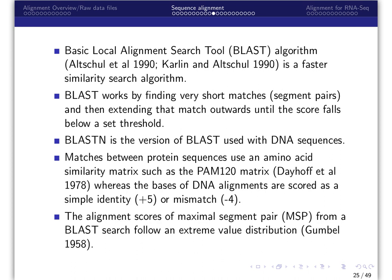More specifically, the BLAST word matching step uses a scoring system that allows for some mismatches as long as the overall alignment score between words is above an empirically determined threshold. Matches between protein sequences use an amino acid similarity matrix such as the PAM-120 matrix, whereas the bases of DNA alignments are scored as a simple identity plus 5 or mismatch minus 4.